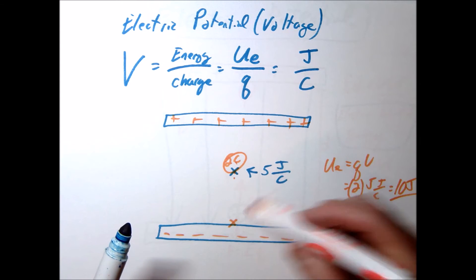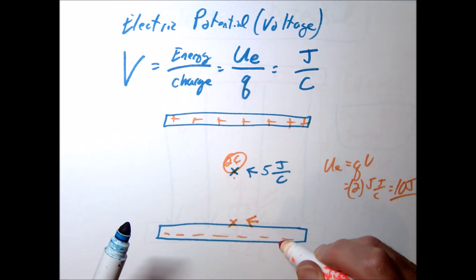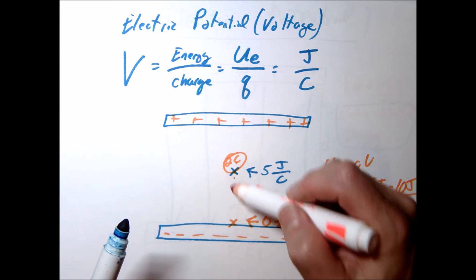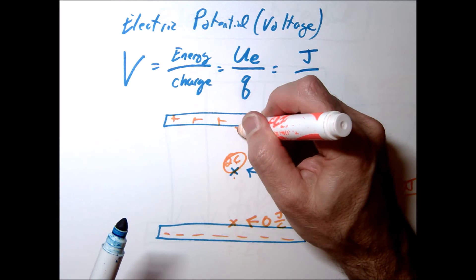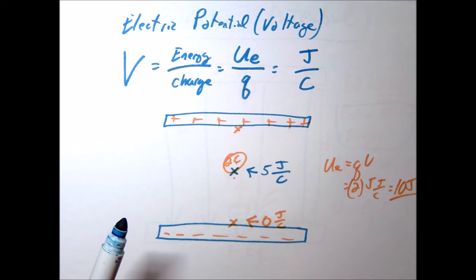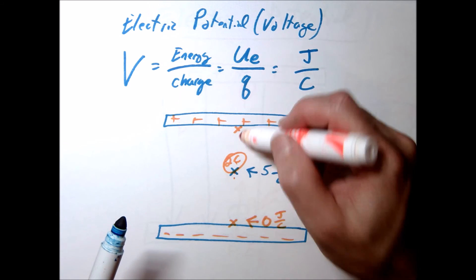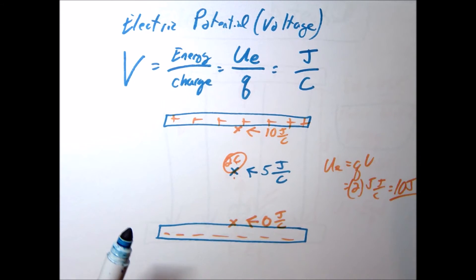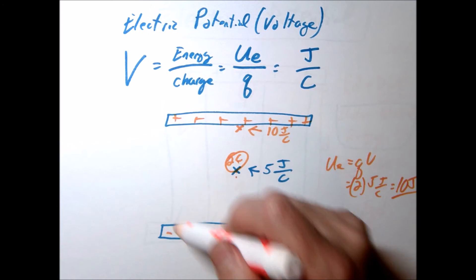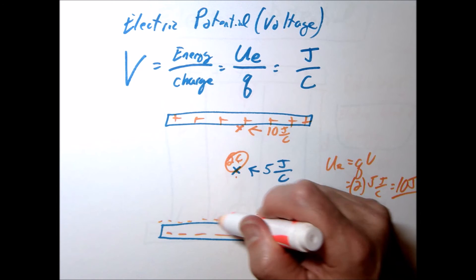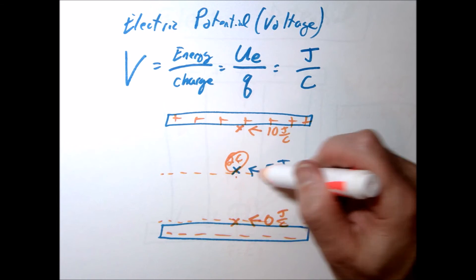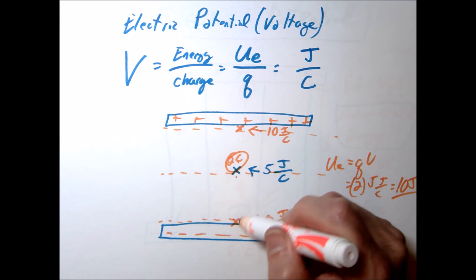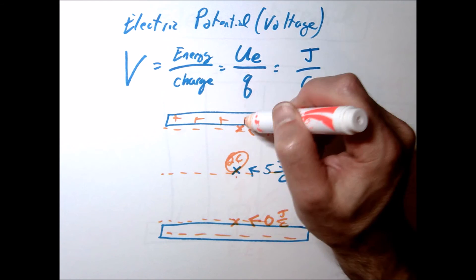So at the bottom, we'd say, well, the voltage here, or the electric potential here would be zero joules per coulomb. And if we went higher and higher, at a higher location, there's going to be more electric potential. In fact, way up here, we might say that there is 10 joules per coulomb. In fact, if we were to, let's just kind of mark this off with some little dashed lines here. So at different locations, if this is zero joules per coulomb, this is five, right, this is 10.